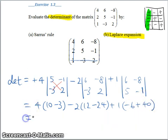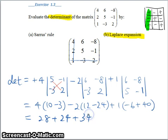So, simplifying this, I have 28 plus 24 plus 34, which still gives me 86.